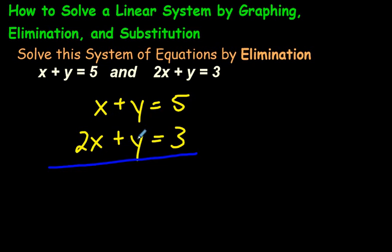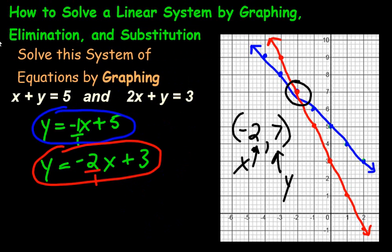What that means is we can multiply either this equation or this equation, or we could multiply both of the equations by a number of our choice so that we can eliminate one of these variables, either the x or the y. For example, we could multiply this top equation right here by negative 2. And if we did that, we'd get negative 2x, negative 2y, and negative 2 times 5 would be negative 10. And then you would see that the negative 2x and the 2x, they would cancel.